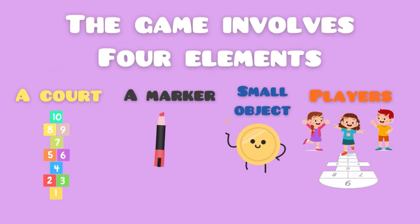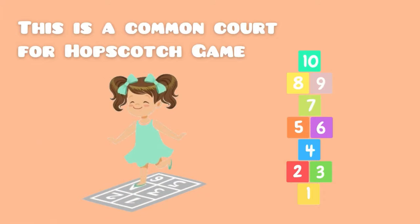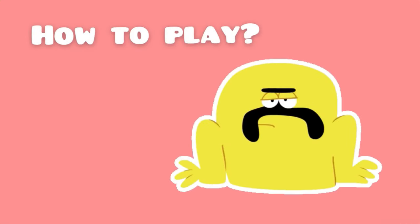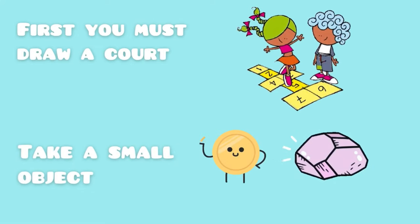The game involves four elements: a court, a marker, a small object like a coin, and players. This is a common court for the hopscotch game, but it can have different forms like this one. How to play it? Let's find out! First, you must draw a court, then take a small object like a coin or a stone.